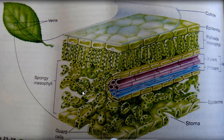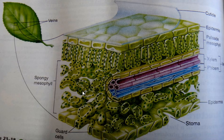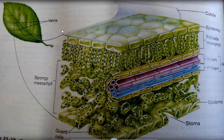Chloroplasts are that kind of special organelle we studied two months ago. They are responsible for photosynthesis because they have the pigments, and the main pigment is chlorophyll. This is the region responsible for photosynthesis in the leaf.